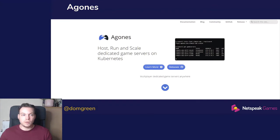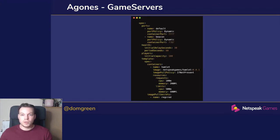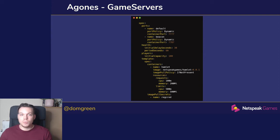So what does Agones give us? It gives us a number of custom resource definitions which make game servers a first-class citizen of Kubernetes, accessible via kubectl. Here you can see the YAML — and it wouldn't be a Kubernetes presentation without a bit of YAML. All we've done is specify the image we want our game server to be, which will be pulled from the container registry. At the top we've specified that we want to map the container port — we have two, the default and the beacon. Port 7777 is dynamically mapped to the host machine, allowing us to turn that host port from the container port into an arbitrary port exposed to the internet.